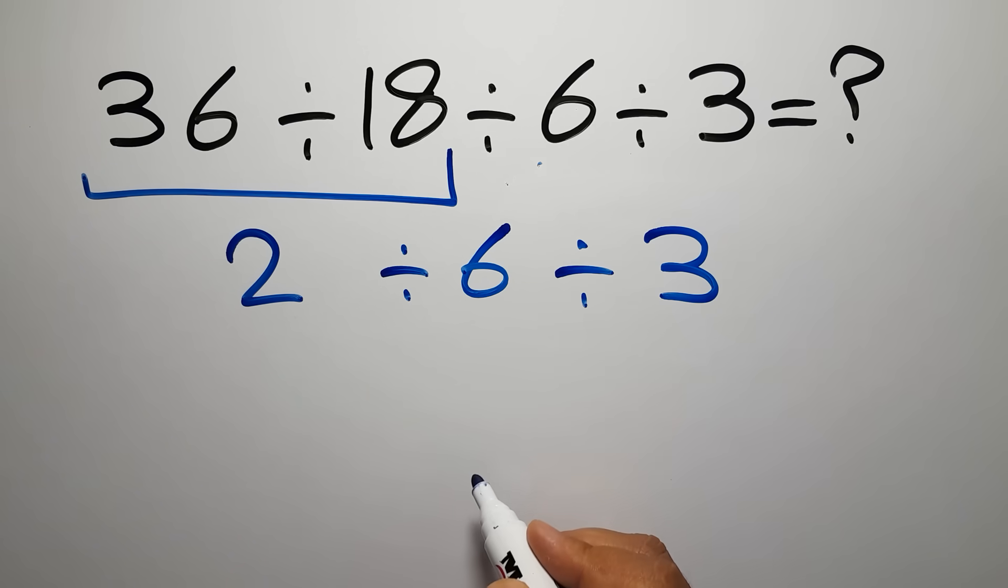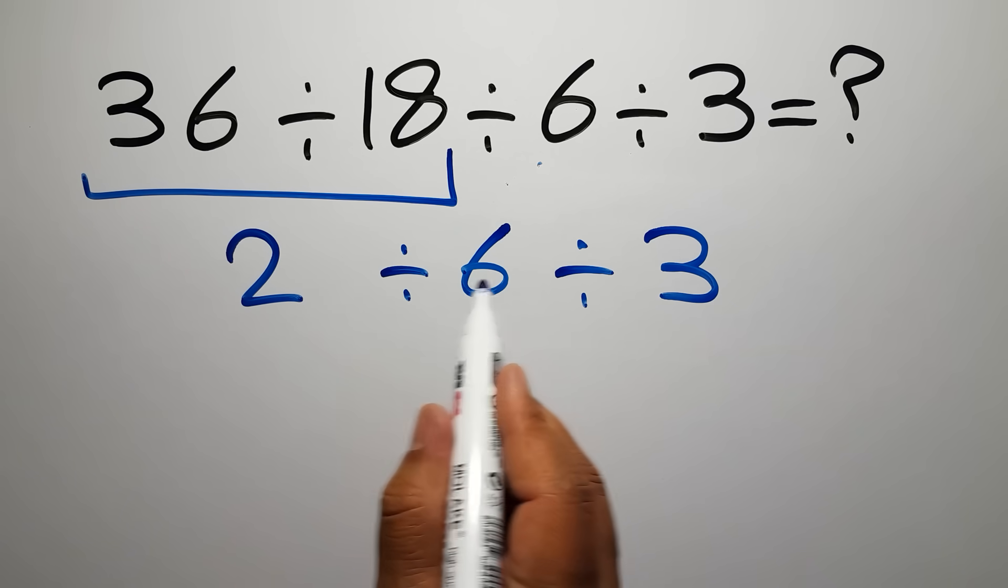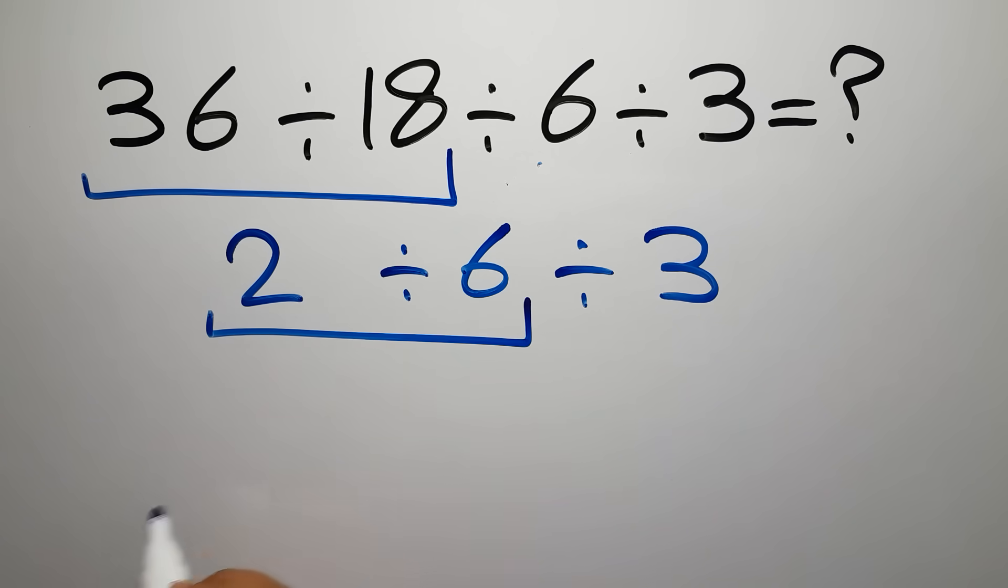Now we have to do 2 divided by 6. We can write 2 over 6. Let's simplify this fraction: 2 divided by 2 gives us 1, and 6 divided by 2 equals 3. So we have 1 over 3.